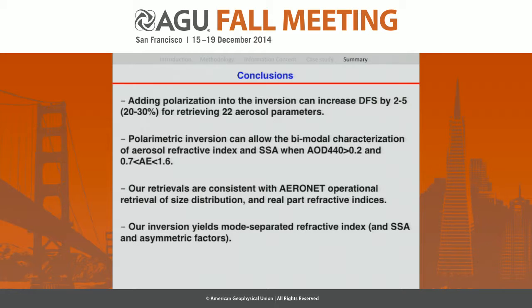In conclusion, adding polarization into the inversion can increase the degree of freedom for signal by 2 to 5, which is a 20 to 30% information increase. Under conditions of AOD larger than 0.2 and Ångström exponent between 0.7 and 1.6, we can perform bimode refractive index retrievals. Our retrievals are consistent with the operational ones, confirming we are doing the right retrieval, but our retrieval additionally yields separate fine and coarse mode refractive index and single scattering albedo.